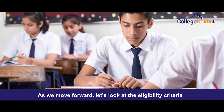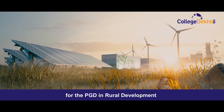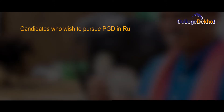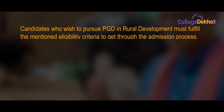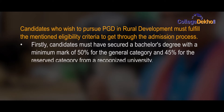As we move forward, let's look at the eligibility criteria for the PGD in Rural Development. Candidates who wish to pursue PGD in Rural Development must fulfill the mentioned eligibility criteria to get through the admission process. Firstly, candidates must have secured a bachelor's degree with the minimum mark of 50% for the general category and 45% for the reserved category from a recognized university.